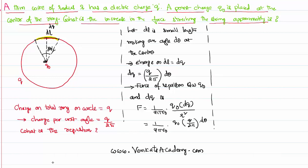The direction of this force will be in the upward direction — outward from the center. As this wire is getting stretched, there is a tension developed in the wire. The tension at any point acts tangentially to the circle. This is the direction of that tension T.